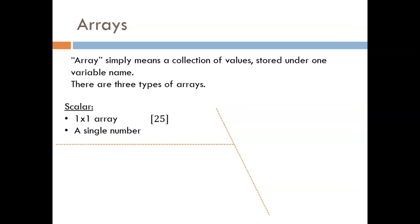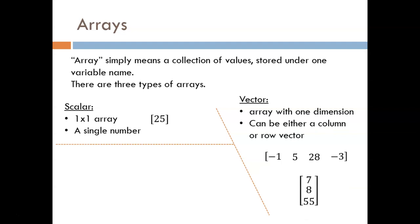The next type of array is a vector. This is an array with one dimension. In other words, it is a list of values, either in a row or a column.